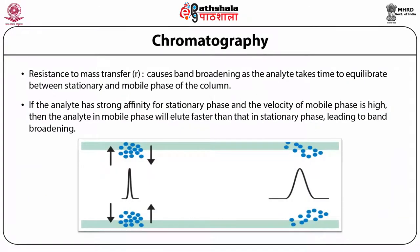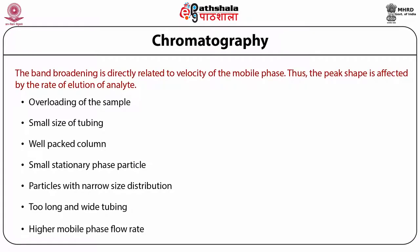The third factor which affects band broadening is resistance to mass transfer. The analyte takes time to equilibrate between the stationary and mobile phase. If the analyte has strong affinity for the stationary phase and the velocity of mobile phase is high, then the analyte in the mobile phase will elute faster than that in the stationary phase, leading to band broadening. Band broadening is directly related to the velocity of mobile phase, and thus the peak shape is affected by the rate of elution of the analyte.